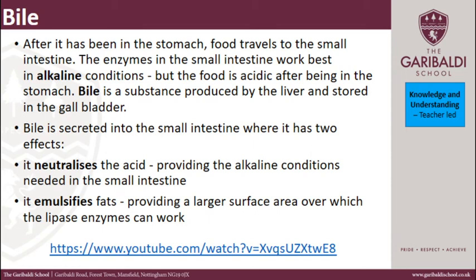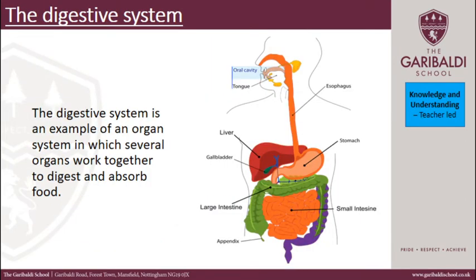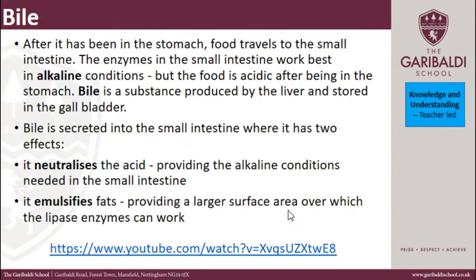So, bile — what is bile? After food has been in the stomach, food travels to the small intestine. The enzymes in the small intestine work best in alkaline conditions. You can have something that is alkaline, acidic, or neutral — this is the pH. But the food is acidic after being in the stomach, as you can see in the diagram — food travels down the oesophagus into your stomach and then into the small intestine, so the food is acidic going into the small intestine.